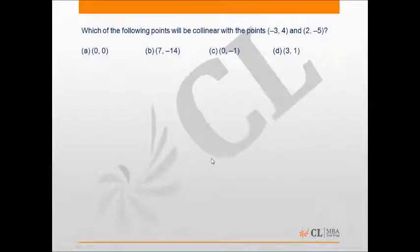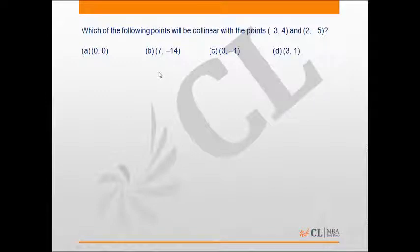This is a problem of coordinate geometry and it is of moderate difficulty level. Here we have to find which of the given points among the options is collinear with the given two points, which are (-3, 4) and (2, -5).